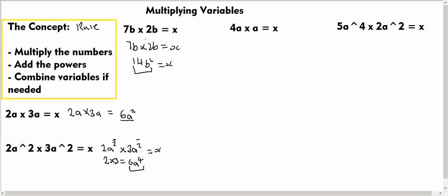Okay, so moving on, we have 4a multiplied by a is equal to x. If we apply the same rule here, we have 4 multiplied by 1 because there is one term of a here, so 4 multiplied by 1 is equal to 4. Then if we add 1a plus 1a is equal to 2a, so we have 4a².